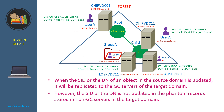Let's take a look at this AD forest. Currently, userA is stored in the Users container in the root domain. Now, if we move userA to the IT OU, then the change will be replicated to the global catalog server of the child domain, updating the distinguished name of userA to the IT OU, because that server is a global catalog server. However, the distinguished name of the userA phantom records stored in the non-global catalog domain controllers are not updated, because they are not global catalog servers.